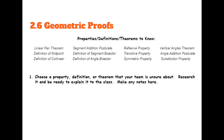The linear pair theorem says that if two angles make up a line, then those angles are supplementary. The definition of midpoint says that if something is a midpoint, then it divides the segment into two equal pieces. The definition of collinear says that if something is collinear, then those points are on the same line.